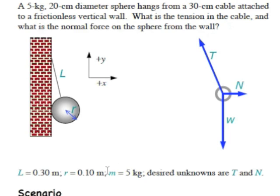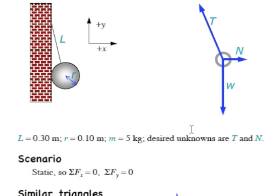The numbers we're given: the length of the cord is 0.3 meters, the radius of the ball is 0.1 meters, and the mass of the ball is 5 kilograms. We want to find the magnitudes of the tension force and the normal force. This is a Newton's first law problem — the sum of all forces is 0, which we can apply separately to the x and y components of force.